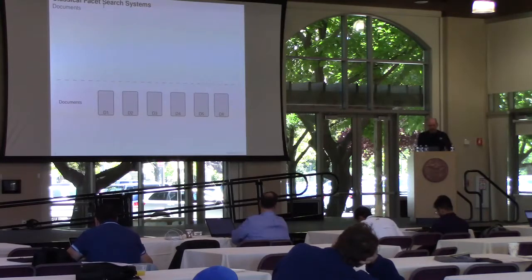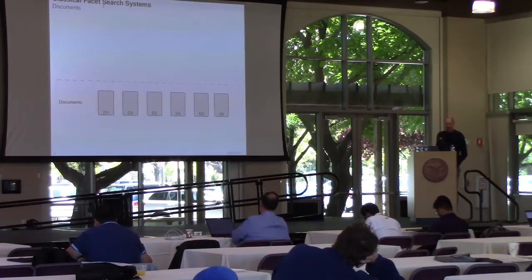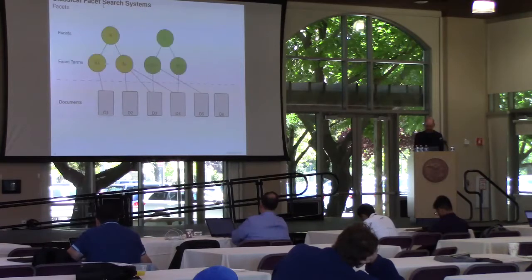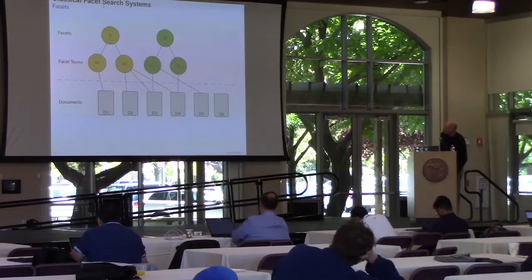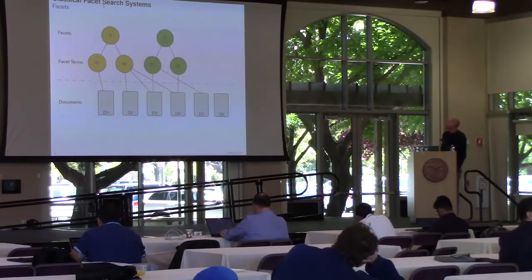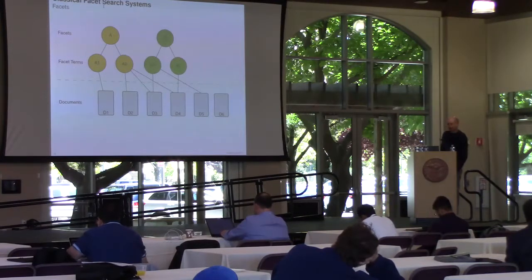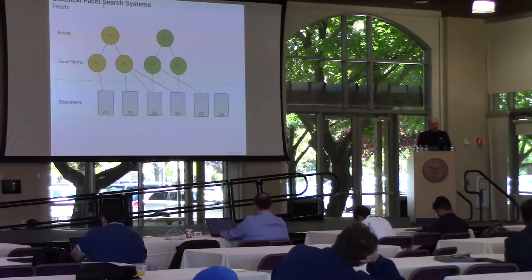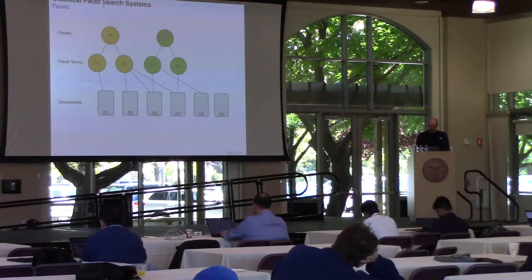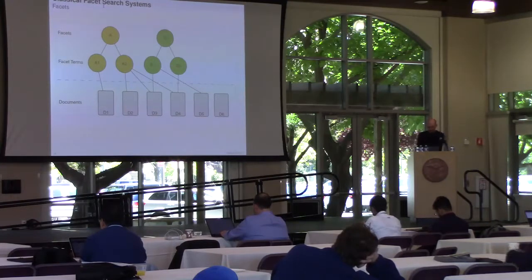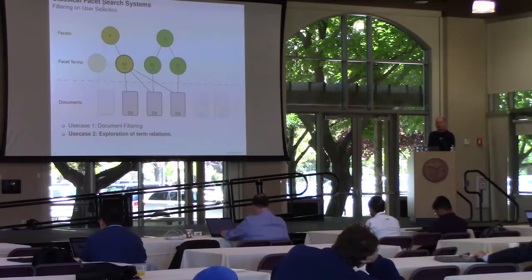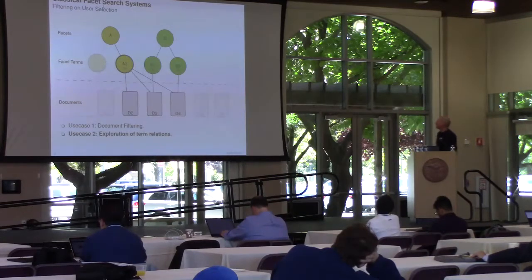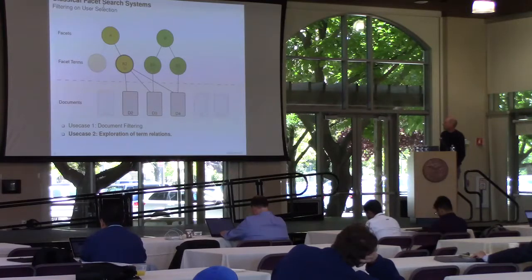Our faceted search system is basically a set of documents, and on top of it we have facets. Each facet comprises several facet terms which in turn are connected to the documents they are relevant for. The user can select a specific facet term and then the system will filter out all the documents which are relevant for this facet term. So document filtering is the use case.